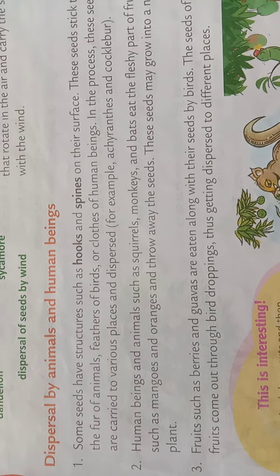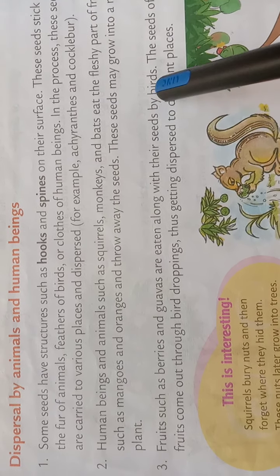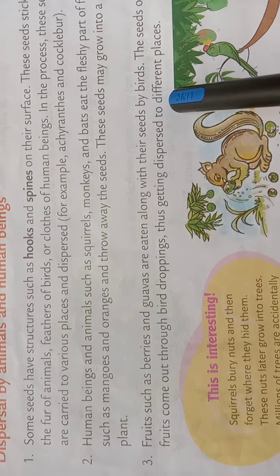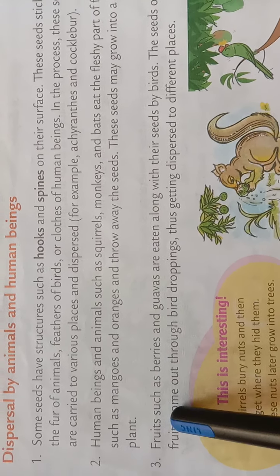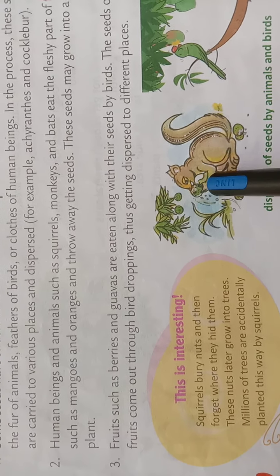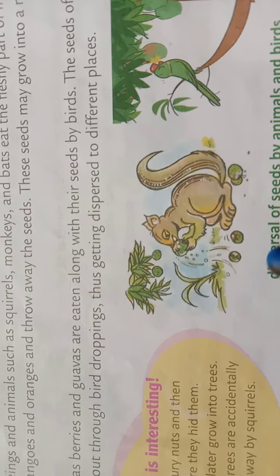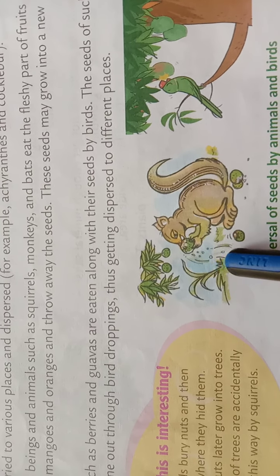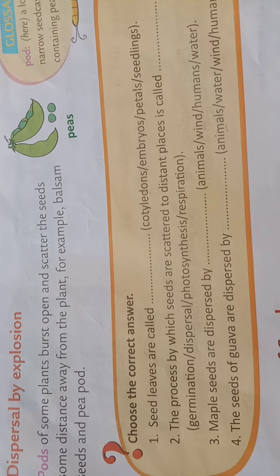Third: fruits such as berries and guavas are eaten along with their seeds by birds. The seeds of such fruits come out through birds' droppings, thus getting dispersed to different places. You can see this in the picture — dispersal of seeds by animals and birds.